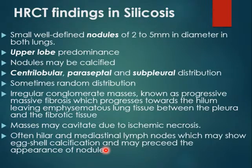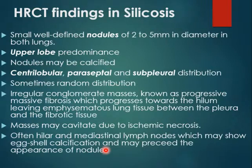The findings in silicosis are small, well-defined nodules of 2–5 mm in diameter in both lungs, predominant in the upper lung lobes because the dust is light and goes up in the air. The nodules may be calcified; they are centrilobular, paraseptal, and subpleural, and sometimes random. On a long-term basis, chronic exposure results in irregular conglomerate masses called progressive massive fibrosis (PMF), which progress towards the hilum in a sausage shape — bilateral, upper lobe masses towards the hilum. PMF may cavitate due to ischemic necrosis.